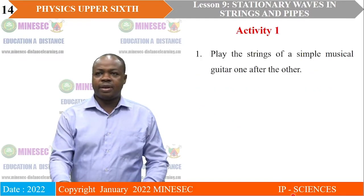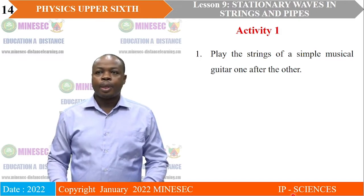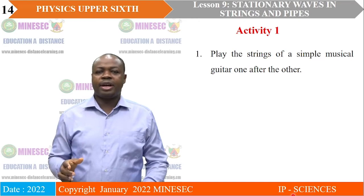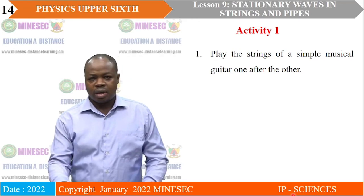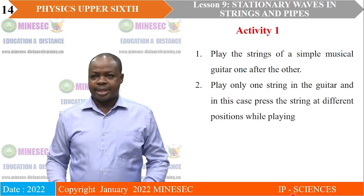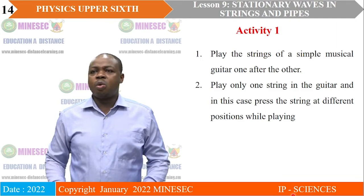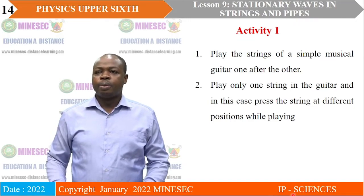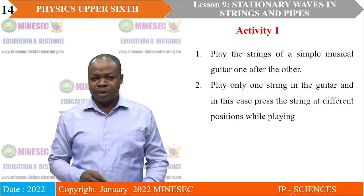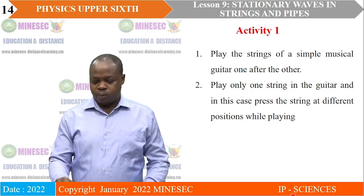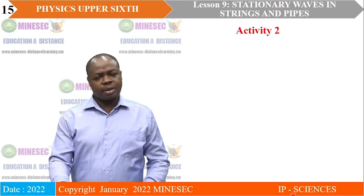The first activity is: play the strings of a simple musical guitar one after the other and observe the notes of sound produced from them. The second activity: play only one string on the guitar and press the string at different positions while playing. Observe the sound produced by the vibrating portion of the string.